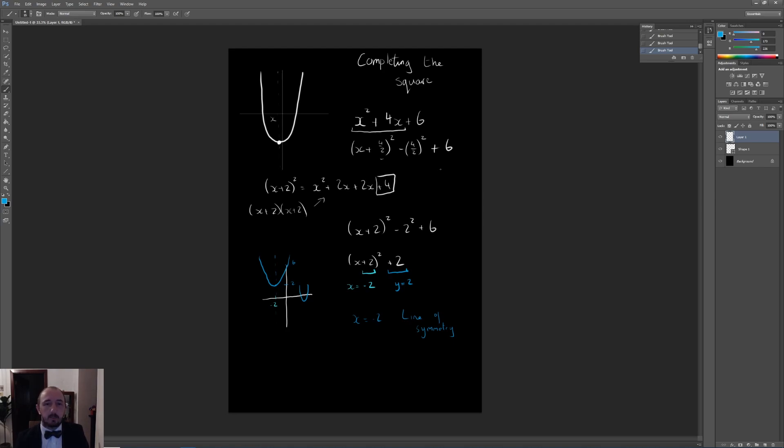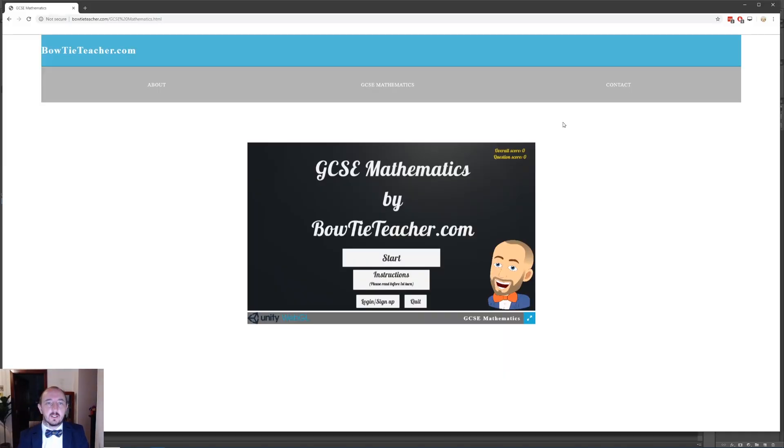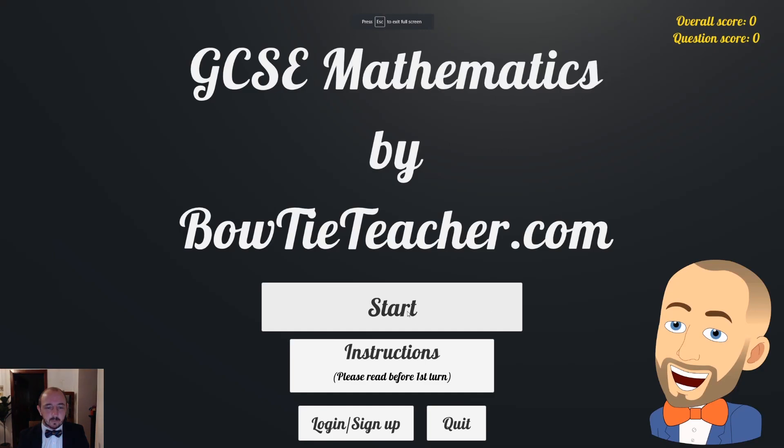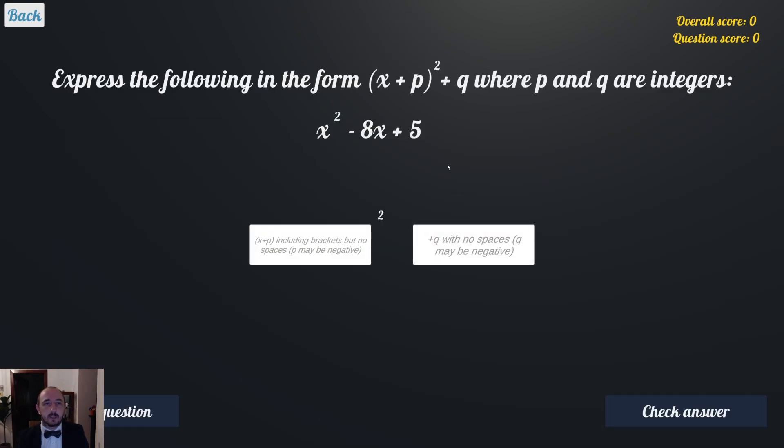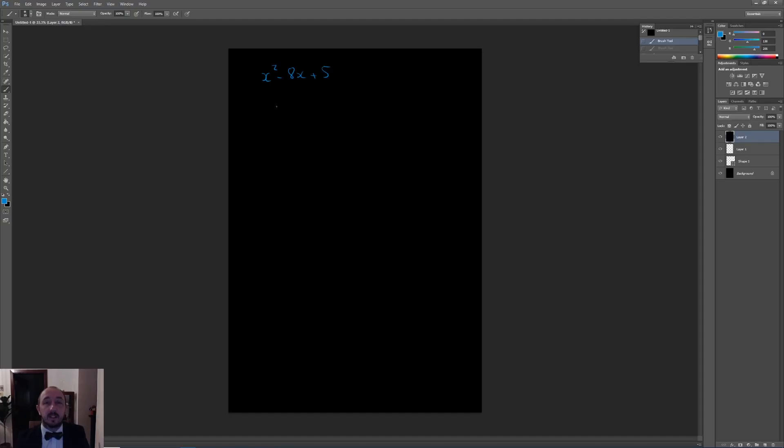If we head over to bowtieteacher.com and go to GCSE Math. We're just going to maximise this here. You can log in or sign up if you want to save your progress. I'm going to go to level 8 and completing the square. So in the exam, you would see this kind of strange way of asking the question of x plus p all squared plus q. They might have different letters here. But what they're trying to do is get you to complete the square. This is the key to telling you to complete the square. They're not going to say complete the square, for example. So we have here x squared minus 8x plus 5.